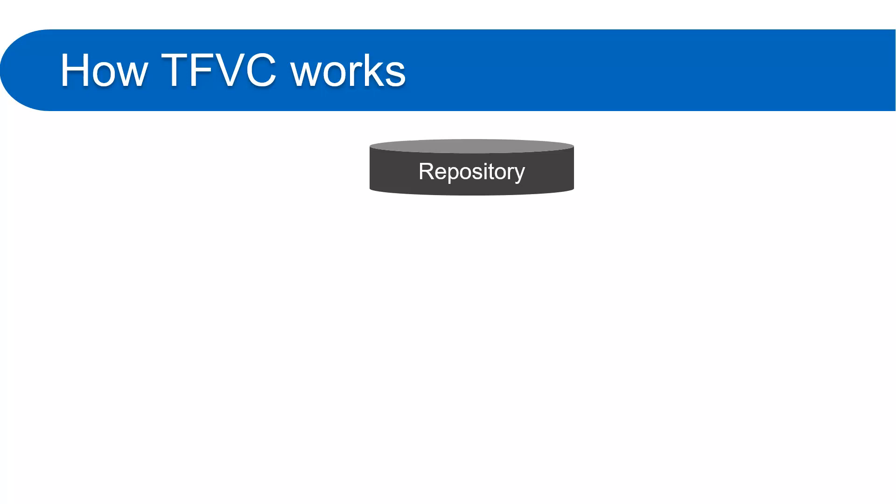Suppose we got a new developer in the team. He has to work on the code available in the repository folder — just think of it as a big folder where the entire code is stored. He needs to make a connection with the repository. The code might be on the developer's machine or on the repository, and we can create a connection between the repo and the developer's system.